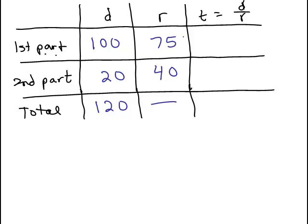So for the first part of the trip his time is 100 over 75 which can be reduced if you divide 25 into both of these numbers to 4 thirds.